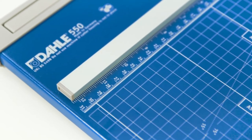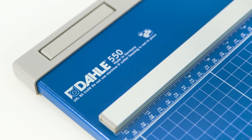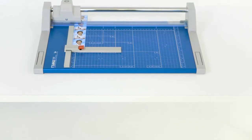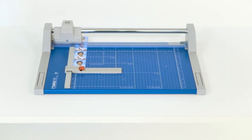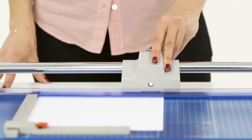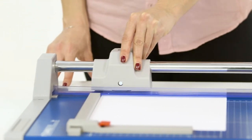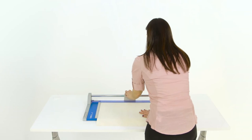Dahle's Model 550 Professional Trimmer provides unparalleled accuracy and cuts up to 14 inches. It's versatile, strong, and perfect for trimming paper, cardstock, canvas, and photos.